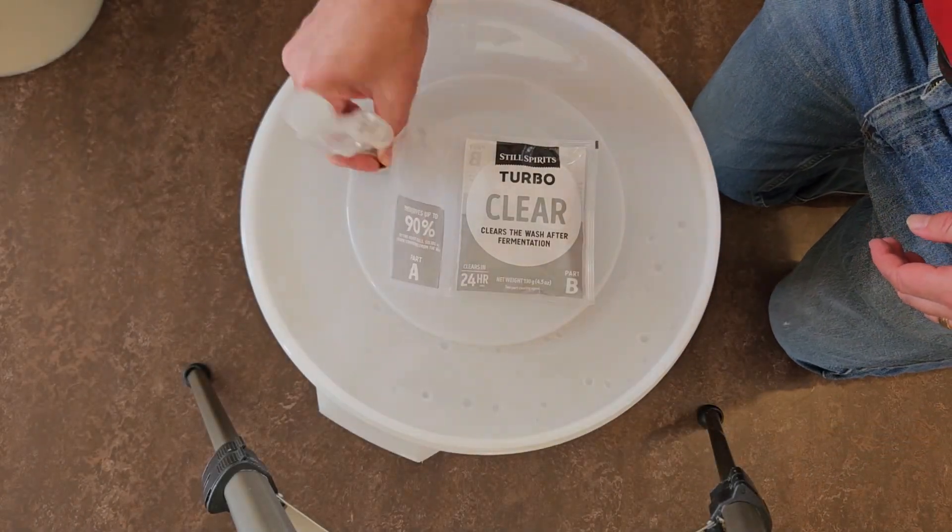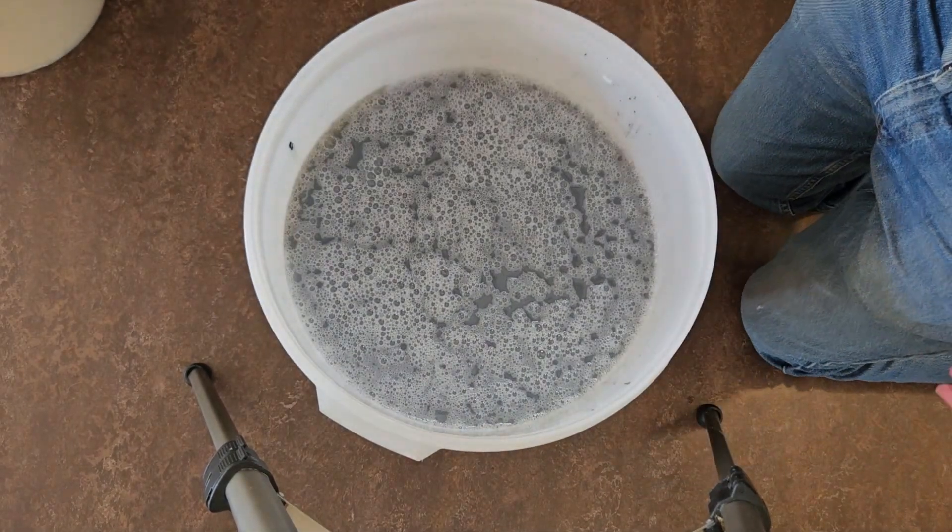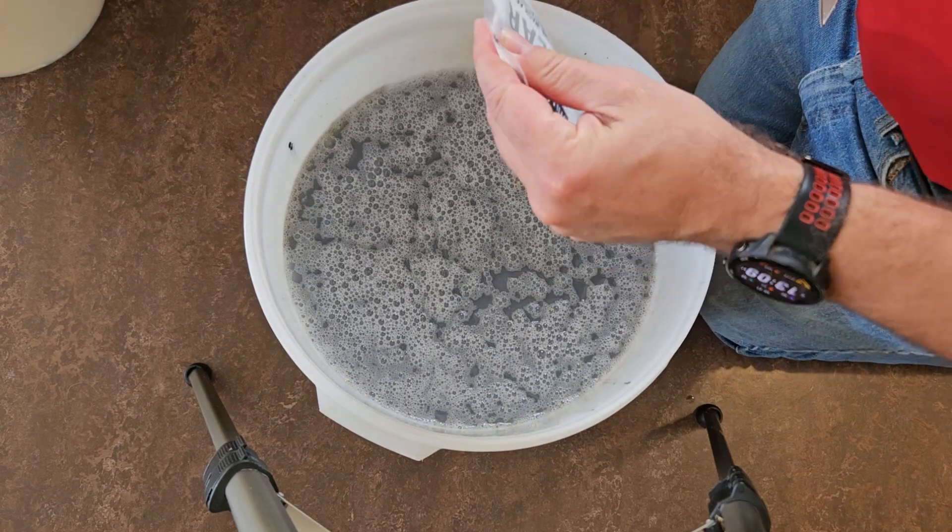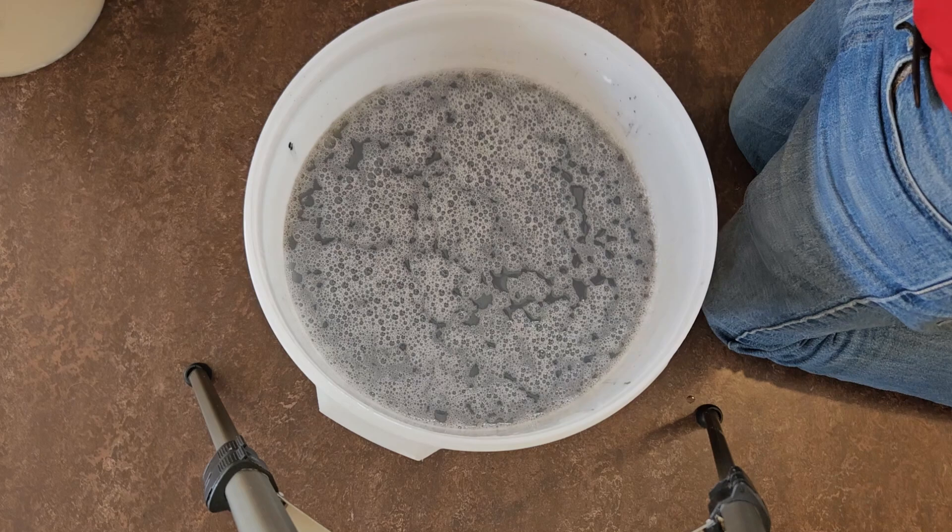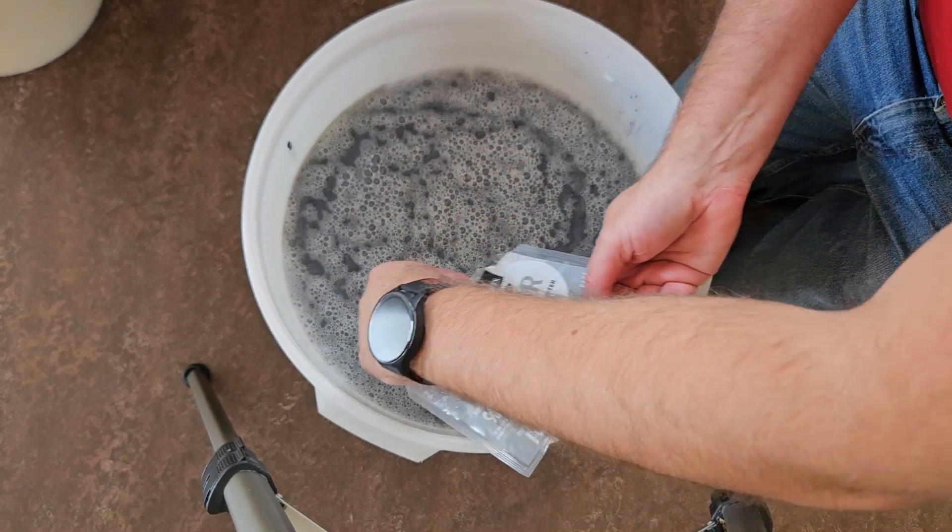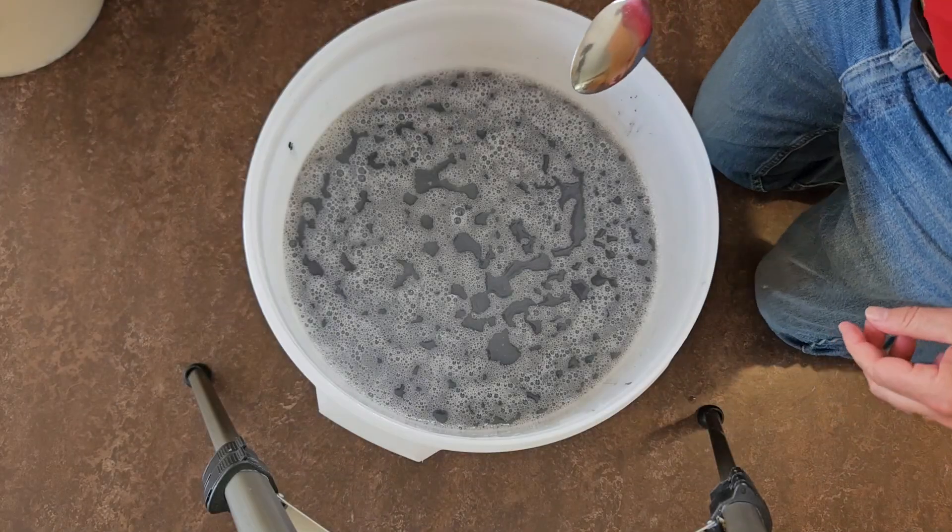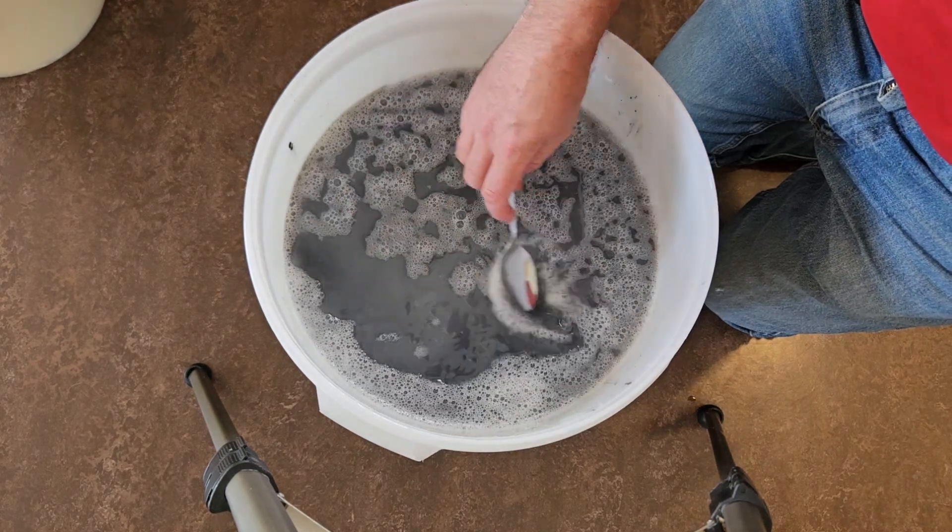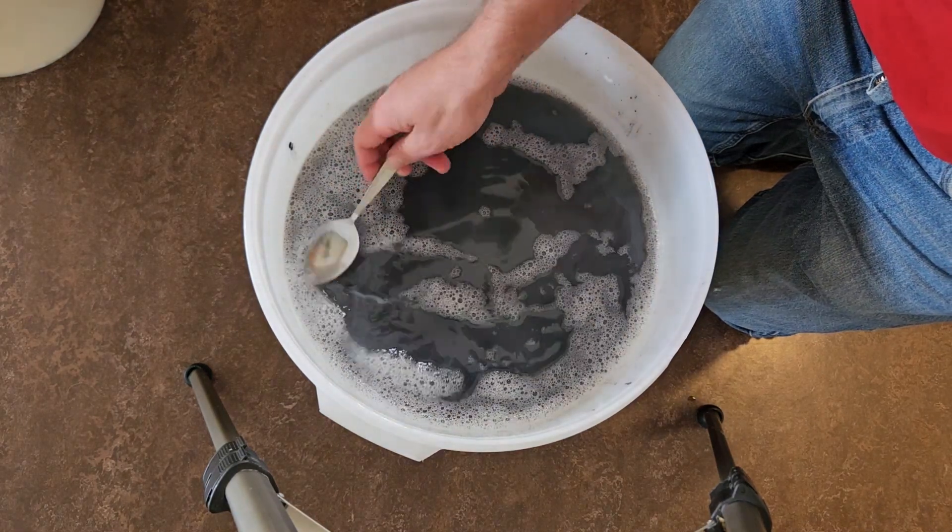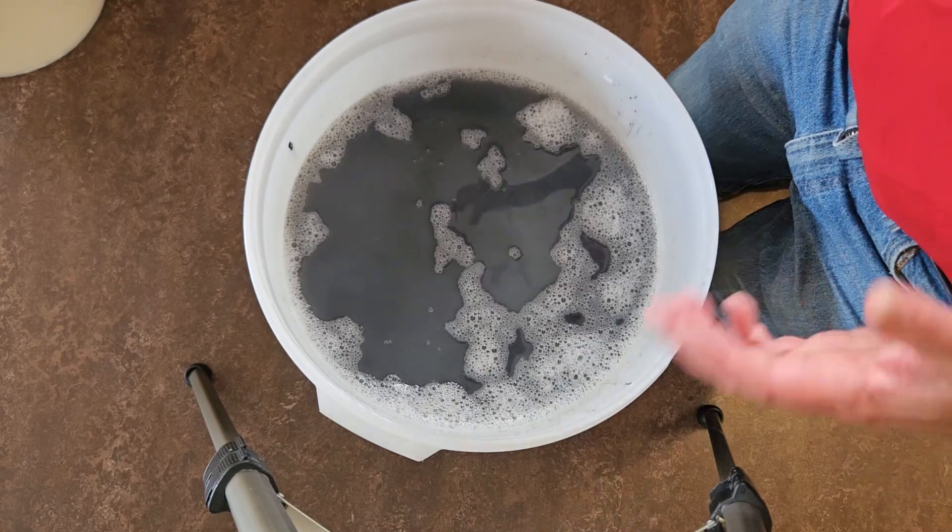We are back again. So take that off to the side and remove the lid again. This time I've got Part B. I'm just going to snip the corner off and very gently pour that over the top, kind of spread it around. I'm just going to take a spoon and very gently spread that so that it is all over the top. So that's Part B added.